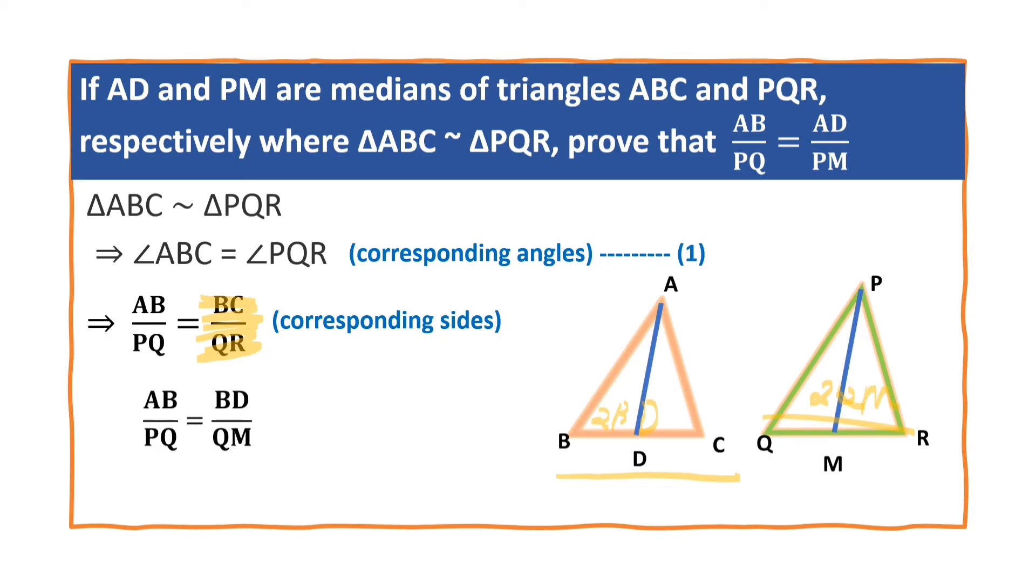Now we can write AB by PQ is equal to BD by, here 2, 2 are there, 2 and 2 get cancelled. So we can write it as BD by QM. D and M are the midpoints of BC and QR. Let this be equation number 2.